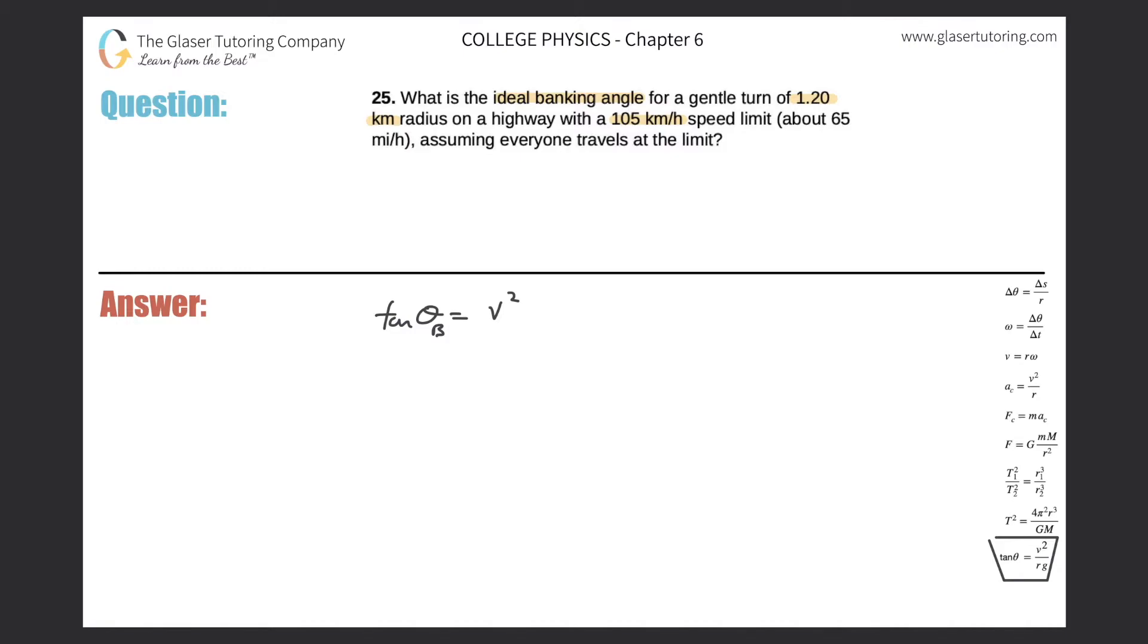We have v squared, which is the linear velocity or tangential velocity squared, divided by rg. So in order to find the angle, I need to know these three things. They gave us these things—I mean really I only need to know two, because the third, gravity, is always known at 9.8. Velocity has to be meters per second, but they gave it to us in kilometers per hour, so let's just do a simple conversion.